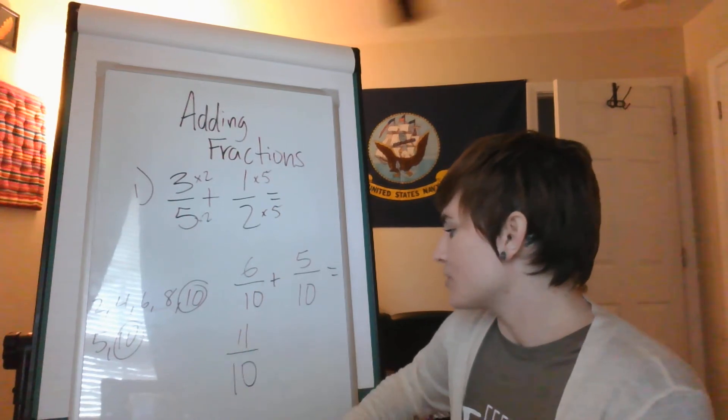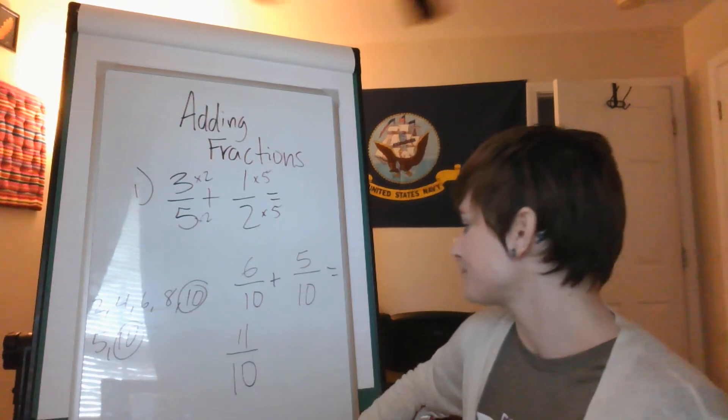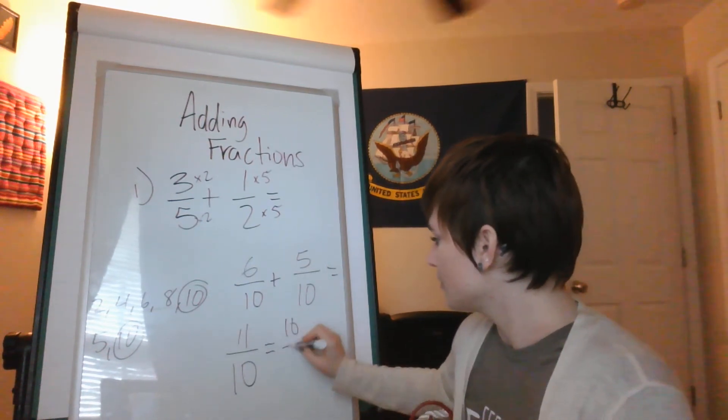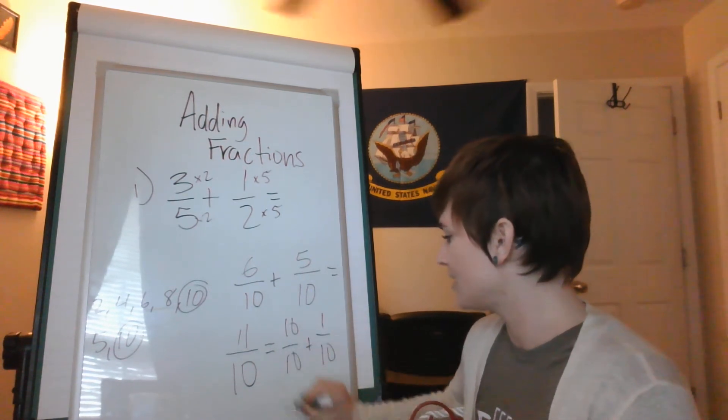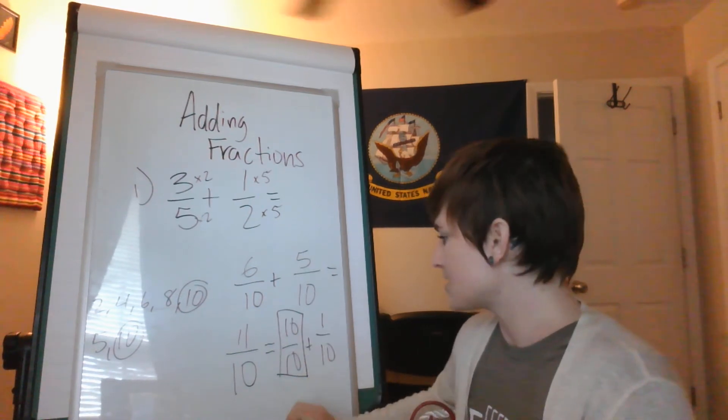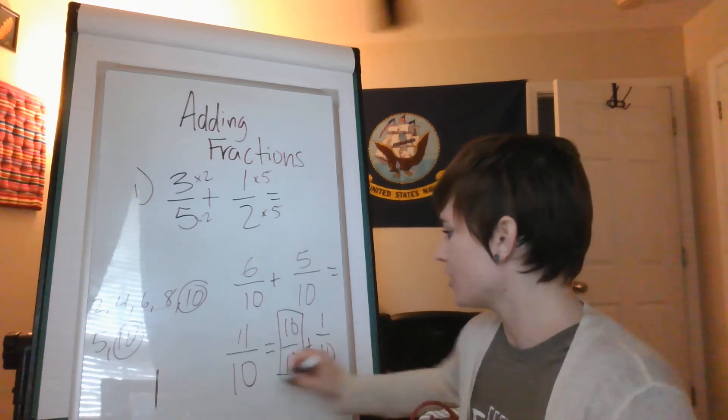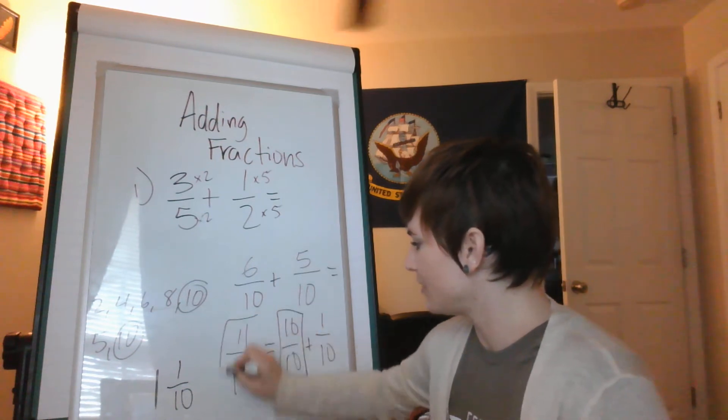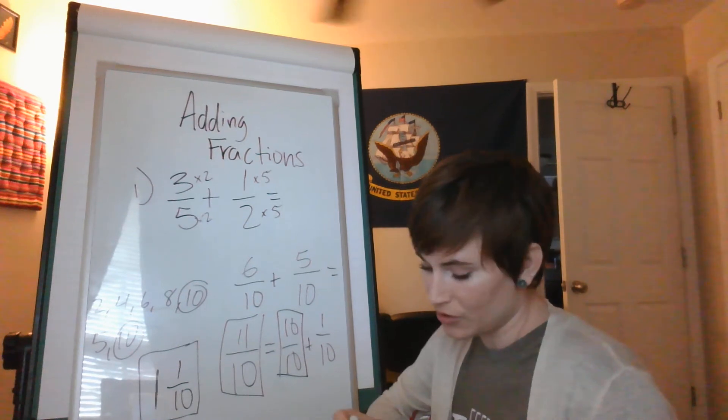Okay, so we have eleven over ten. We know that eleven is bigger than ten by one. I hope we know that. So this is equal to ten tenths plus whatever's left, one tenth. And we know when the numerator and the denominator are equal, that's the same thing as one whole. So one and one tenth. So you can say eleven tenths or you can say one and one tenth. Both of those are correct.